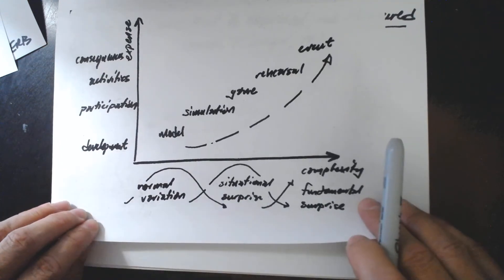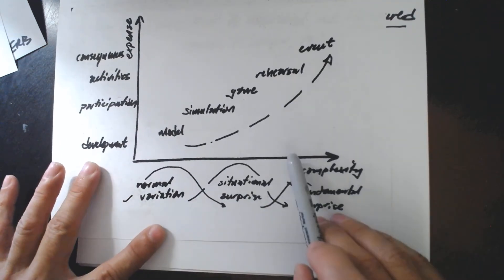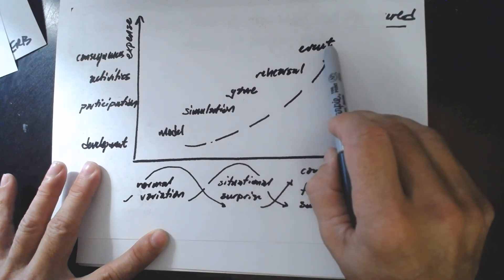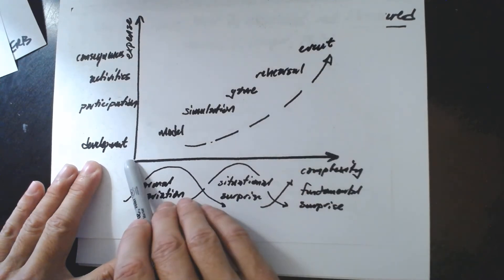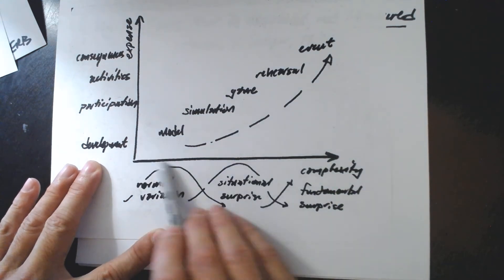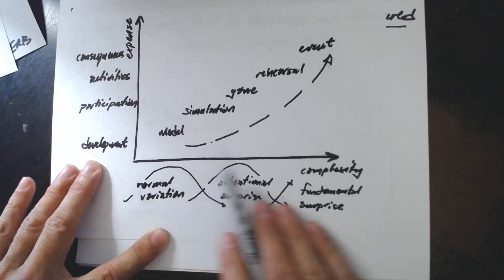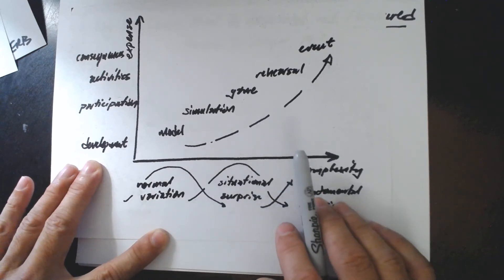Again, there is an important thing to point out about these settings under which we assess resilience rather than measure it. As we move towards the right, towards the more complex, our relationship with surprise and uncertainty evolves.